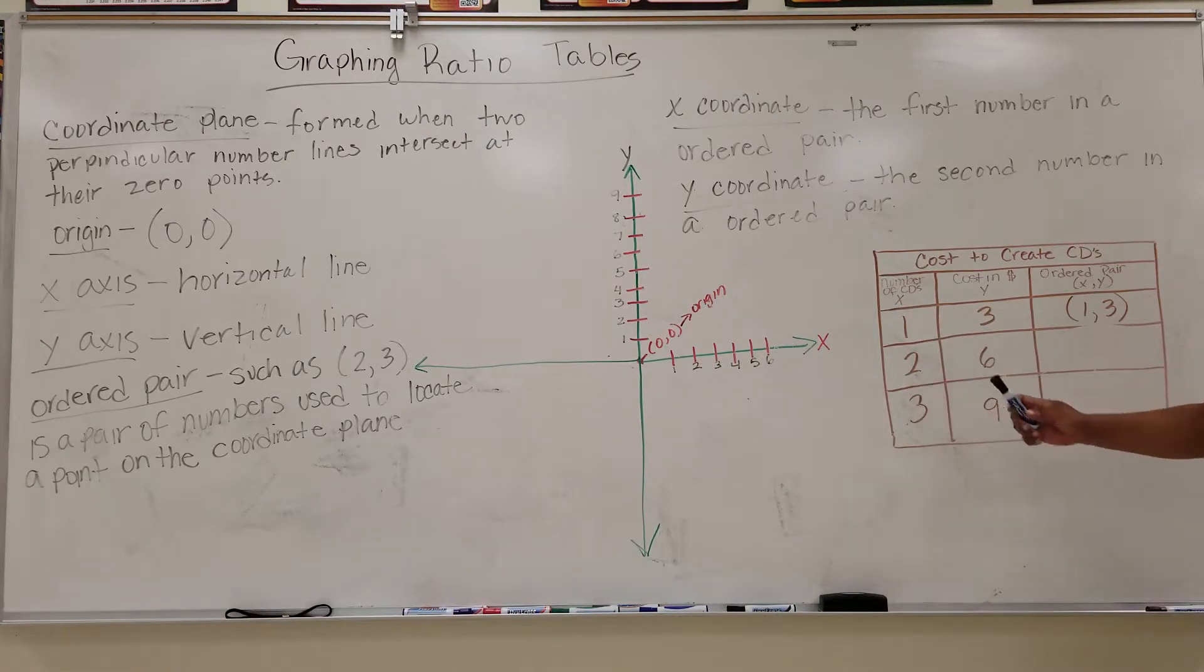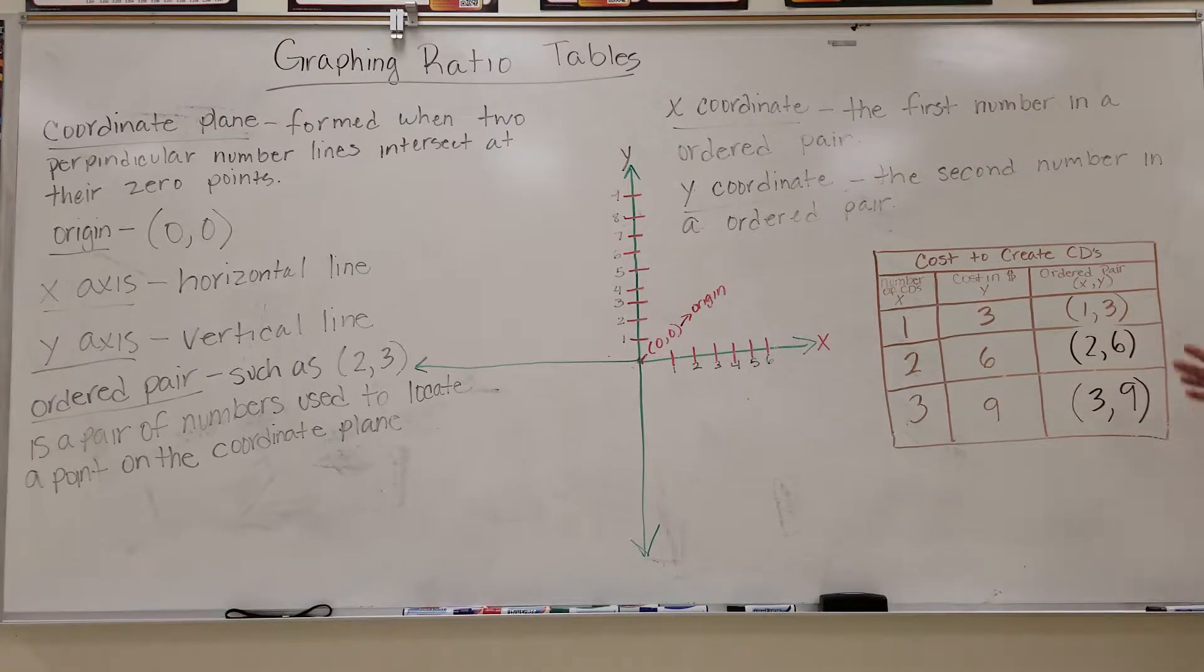Here we have two, the cost is six dollars, so therefore our ordered pair will be (2, 6). Here, three, the cost is nine, and so our ordered pair will be (3, 9). So when we graph...